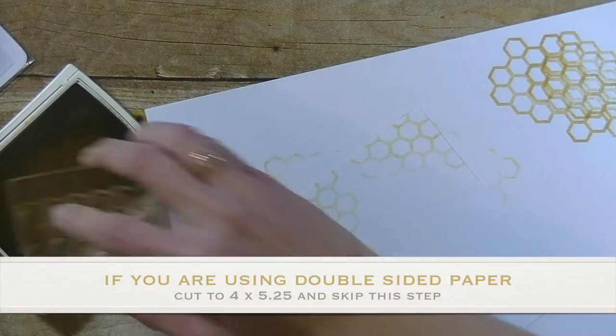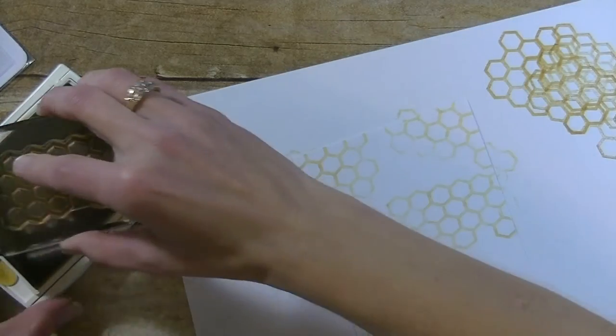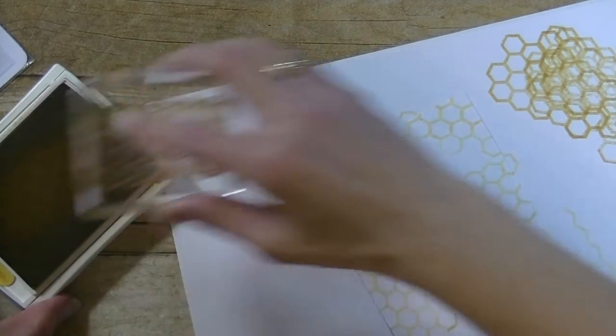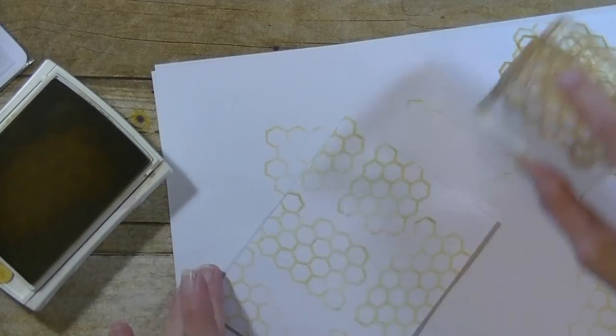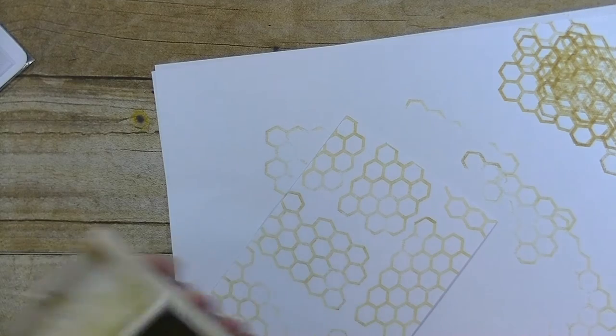If you want to, you can of course use double-sided paper, but I like to make it my own. So I'll do one more here. Another one right there. Turn it and do one right there. Okay, so I'm done with the yellow. I can close that one up.